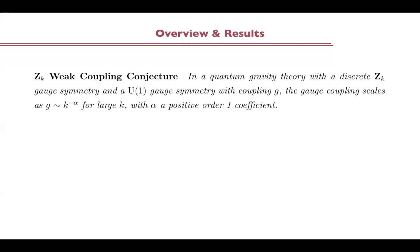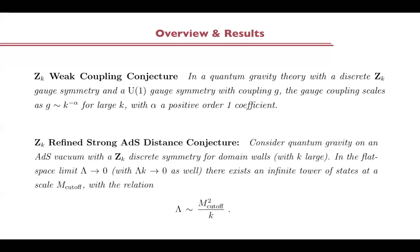This is the first conjecture on which I will spend most of the time. There is a second one, which has to do also with discrete symmetries, which we baptized the Z_K refined strong anti-de Sitter distance conjecture. The idea is to extend this conjecture proposed for anti-de Sitter, which has to do with scale separation when you go to the flat space limit. To pose it properly, the idea is to consider quantum gravity on some ADS vacuum, which should be supersymmetric according to other stronger constraints. We assume there is a Z_K discrete symmetry acting not on particles but rather on domain walls. The natural thing to which this couples is some kind of discrete three-form. When you go to the flat space limit of vanishing vacuum energy, there exists an infinite tower of states with a cutoff related to the vacuum energy, but in a way related to the discrete symmetry order. So it's a refinement of existing strong ADS distance conjectures.